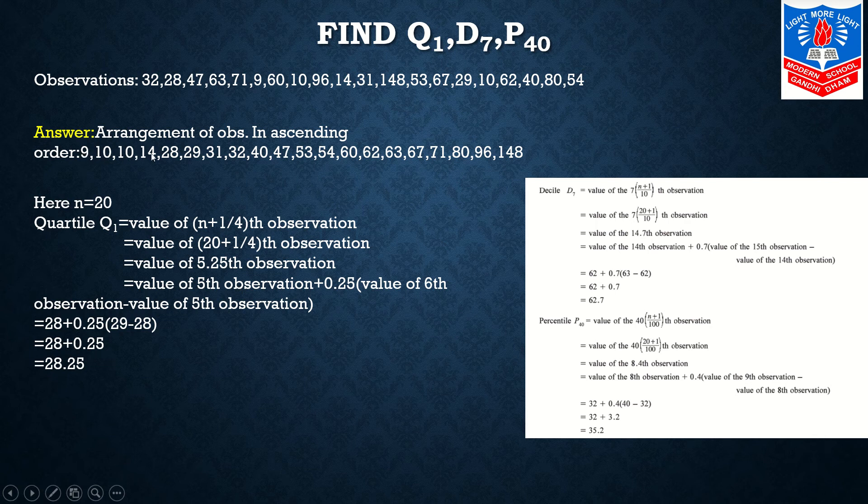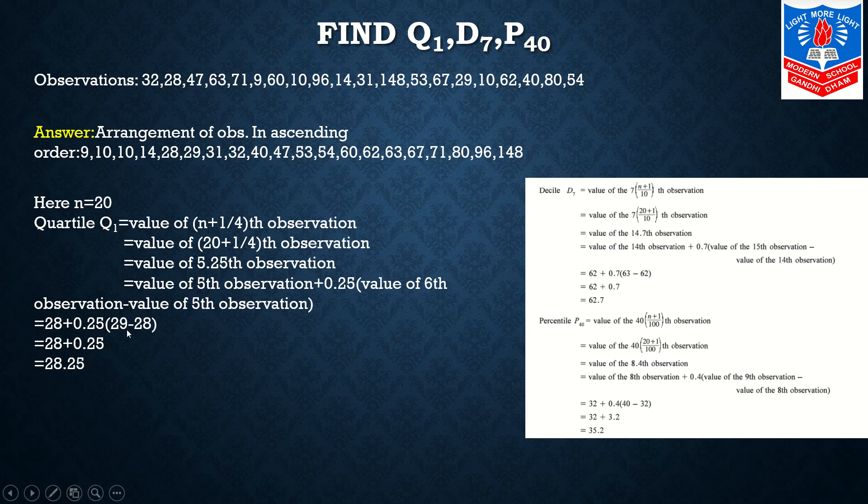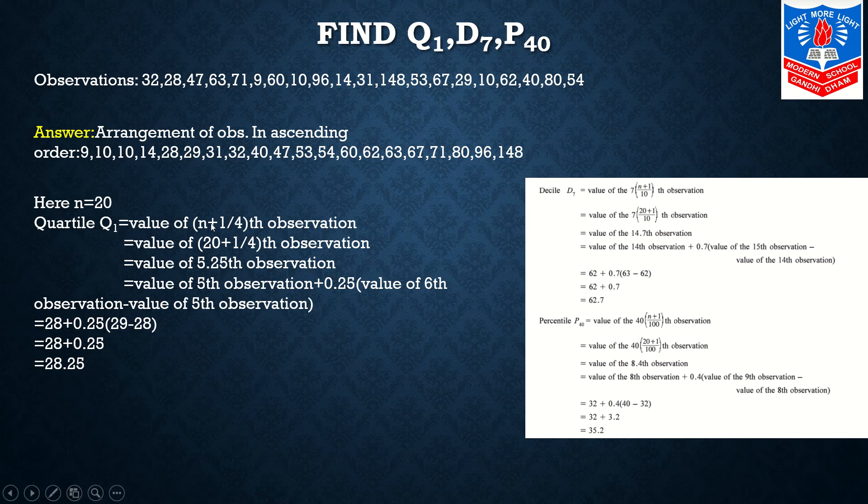So 1, 2, 3, 4, 5 and 6. 28 is our 5th observation and our 6th observation is 29. So we will write it in our next step: 28 + 0.25(29 - 28). 29 minus 28 you will get 1. If I multiply by 0.25 I will get 0.25. So finally 28 + 0.25 is 28.25, our answer for Q1.